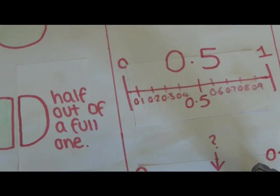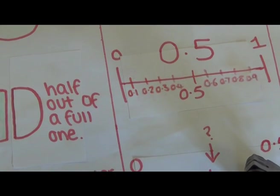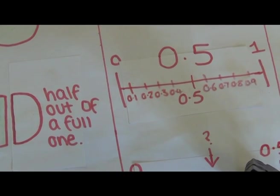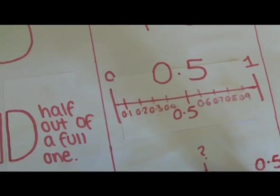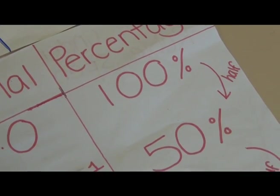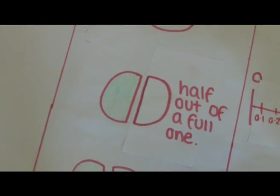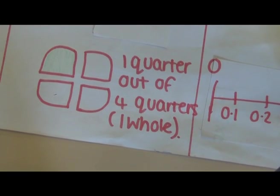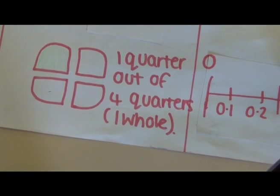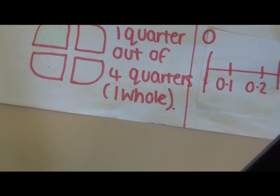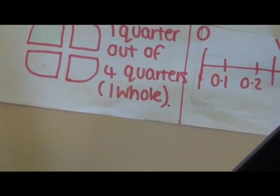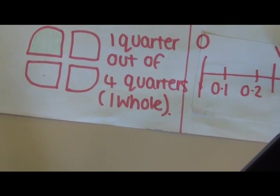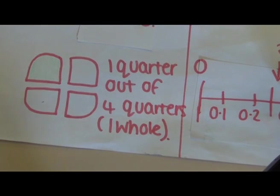One half is equal to 0.5. You have 0.5 and add it on to 0.5 and you will get a whole one. So the percentage is 50% because that is half of 100%, equaling one half. One quarter is equal to 25% because 25 added four times equals 100%. A quarter has four parts to it.